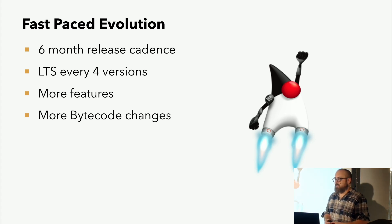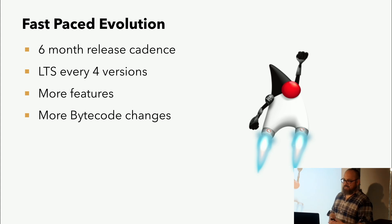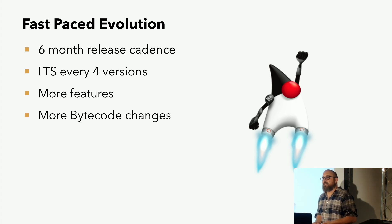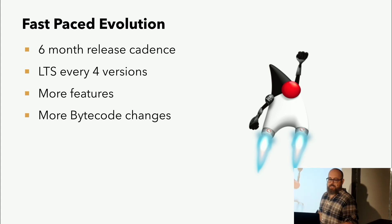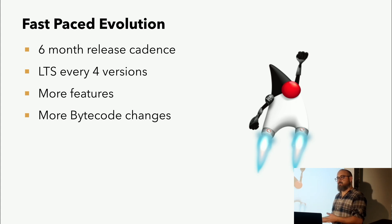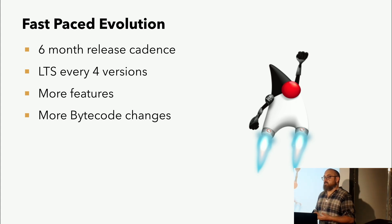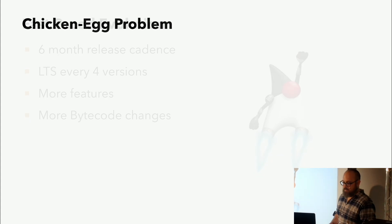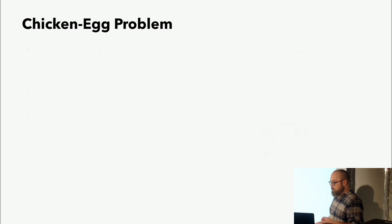Jede neue Version bringt auch eine neue Classfile-Version mit sich. Und jeder von uns hat sicherlich schon mal die IllegalArgumentException UnsupportedMajorClassfileVersion gesehen, wenn er versucht hat, was abzudaten oder mit anderem Code zu arbeiten. Teilweise sind es neue Features, manchmal sind es aber auch einfach nur Änderungen bestehender Features. Das bedeutet aber, wenn man diese neuen Features nutzen will, oder man möchte, dass Konsumenten von Libraries und Frameworks das auch benutzen können, müssen die Libraries und Frameworks updaten. Das bedeutet aber auch, dass das JDK updaten muss, denn das JDK setzt auch ASM ein. Und genau daher kommt das Henne-Ei-Problem.